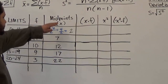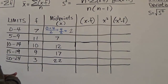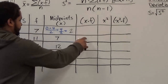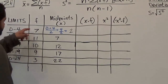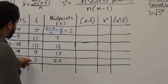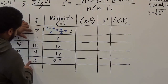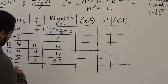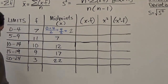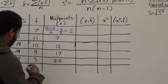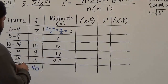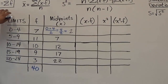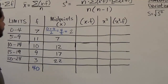We don't need to sum the midpoint column, but before we move on, let's take the sum of the f column. We have seven, eleven, ten, nine, and three. Three and seven is ten, plus another ten is twenty, plus another twenty is forty. I'm going to put all the sums in blue so we can see the difference between the data and the column sums. Our sum of f, which is our n value, is forty.